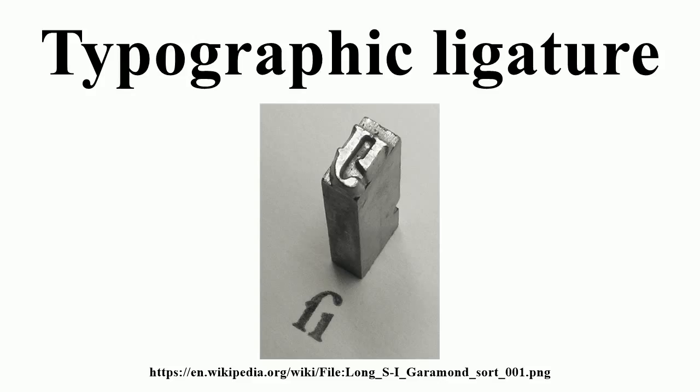The character Æ, lowercase æ, when used in the Danish, Norwegian, or Icelandic languages, or Old English, is not a typographic ligature. It is a distinct letter, a vowel, and when alphabetized, is given a different place in the alphabetic order. In modern English orthography, Æ is not considered an independent letter but a spelling variant — for example, 'Encyclopædia' versus 'Encyclopaedia' or 'Encyclopedia'.